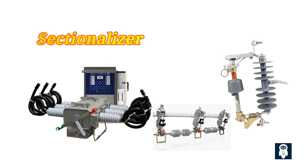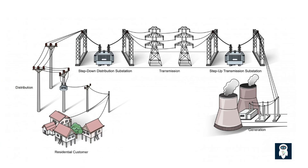For example, if a bird causes a temporary fault on the distribution line, a recloser would attempt to close the circuit multiple times before the sectionalizer would ultimately open to isolate the faulted section after reaching a certain number of interruptions. Conversely, if a vehicle crash causes a permanent fault on the line, the circuit breaker would instantly trip to prevent further damage, while the sectionalizer would not come into play in this scenario.